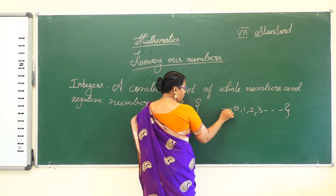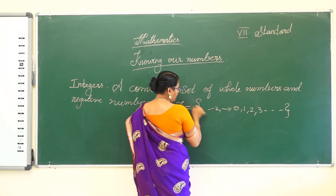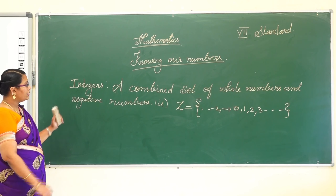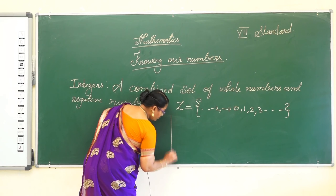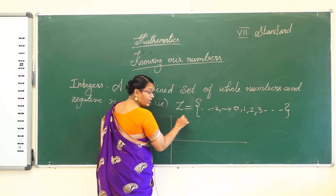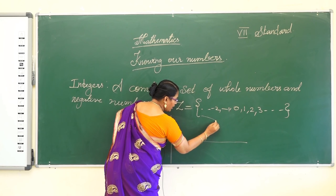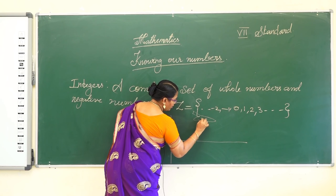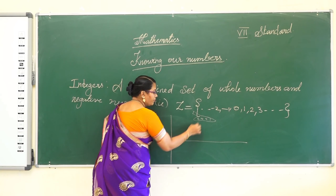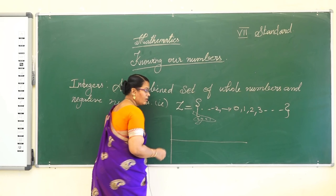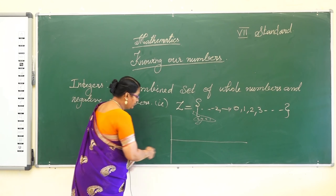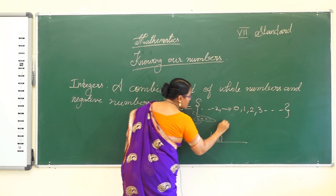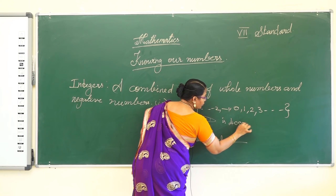And also all the negative numbers: minus 1, minus 2, etc. So for example, consider an aeroplane flying in the sky at a height of 4000 metres above sea level.